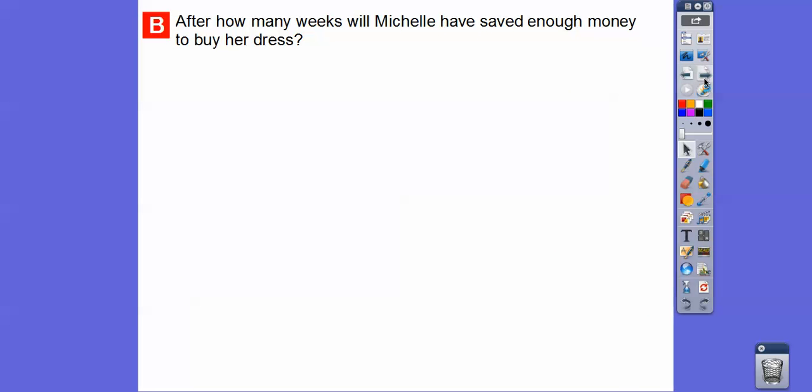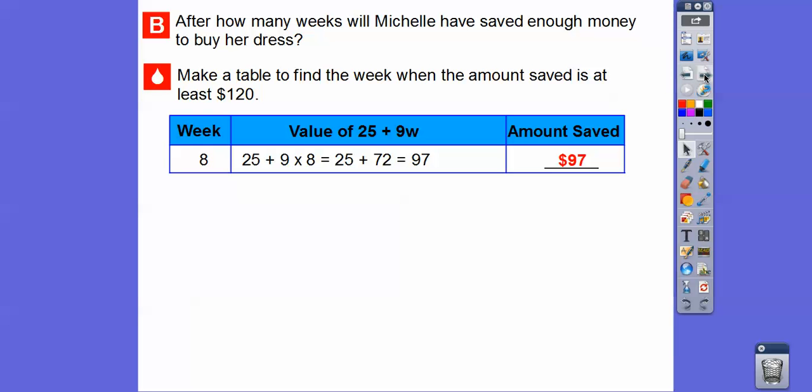So let's go ahead and after how many weeks will Michelle have saved enough money to buy her dress? Let's make a table to find the week when the amount she saved is at least $120. It won't be exactly $120, at least I don't think it will, but let's see when it will be at least. Remember after 8 weeks she saved $97.